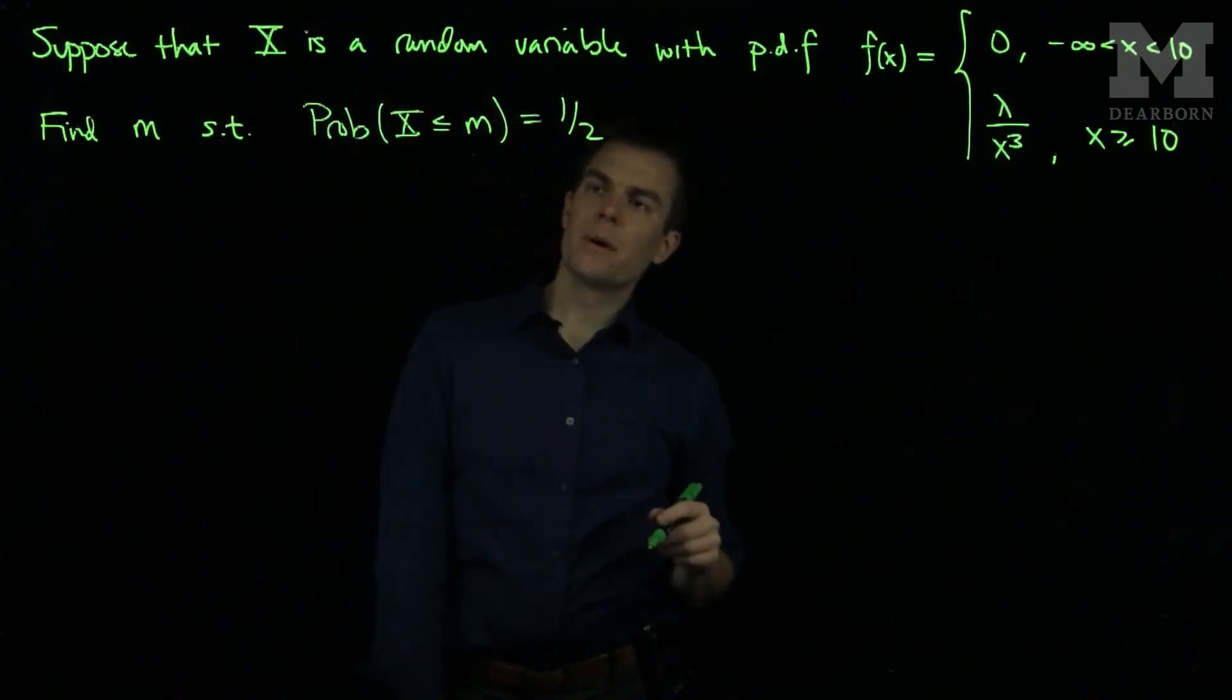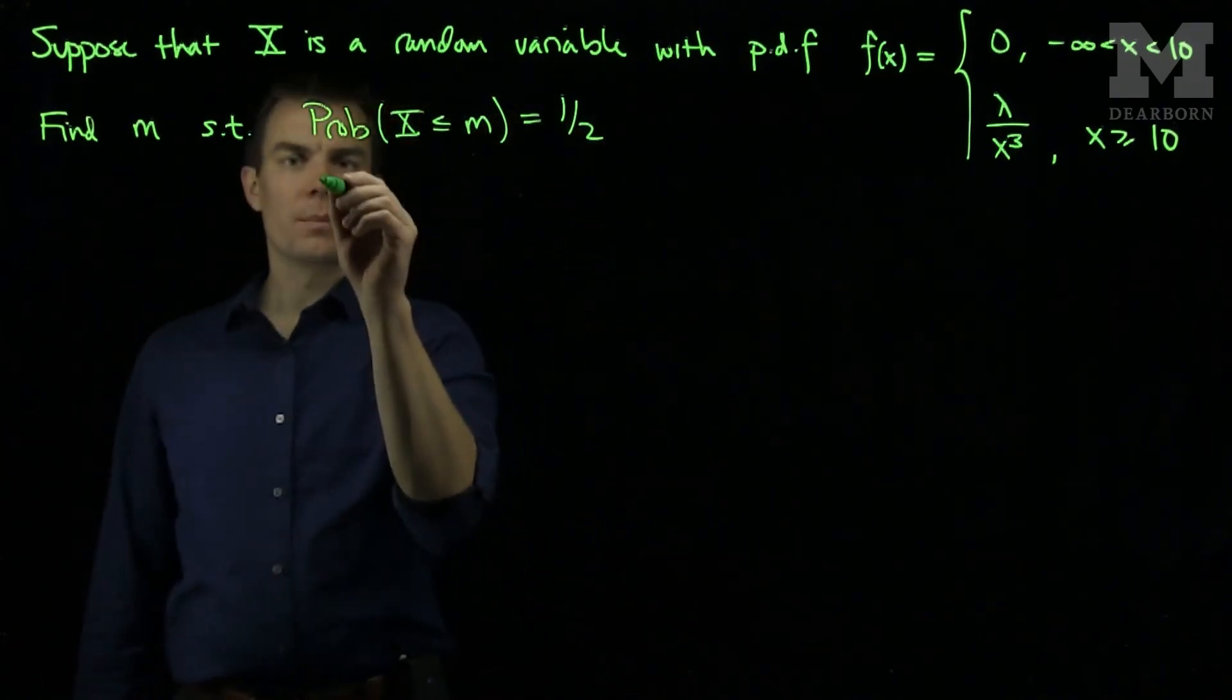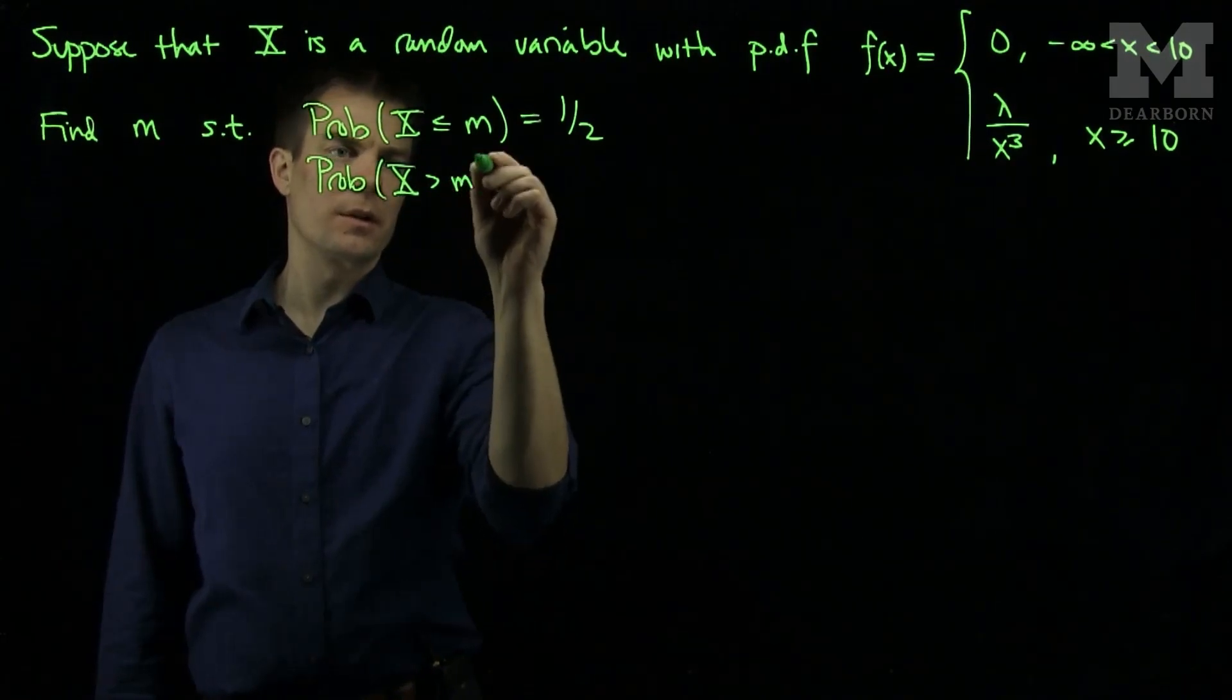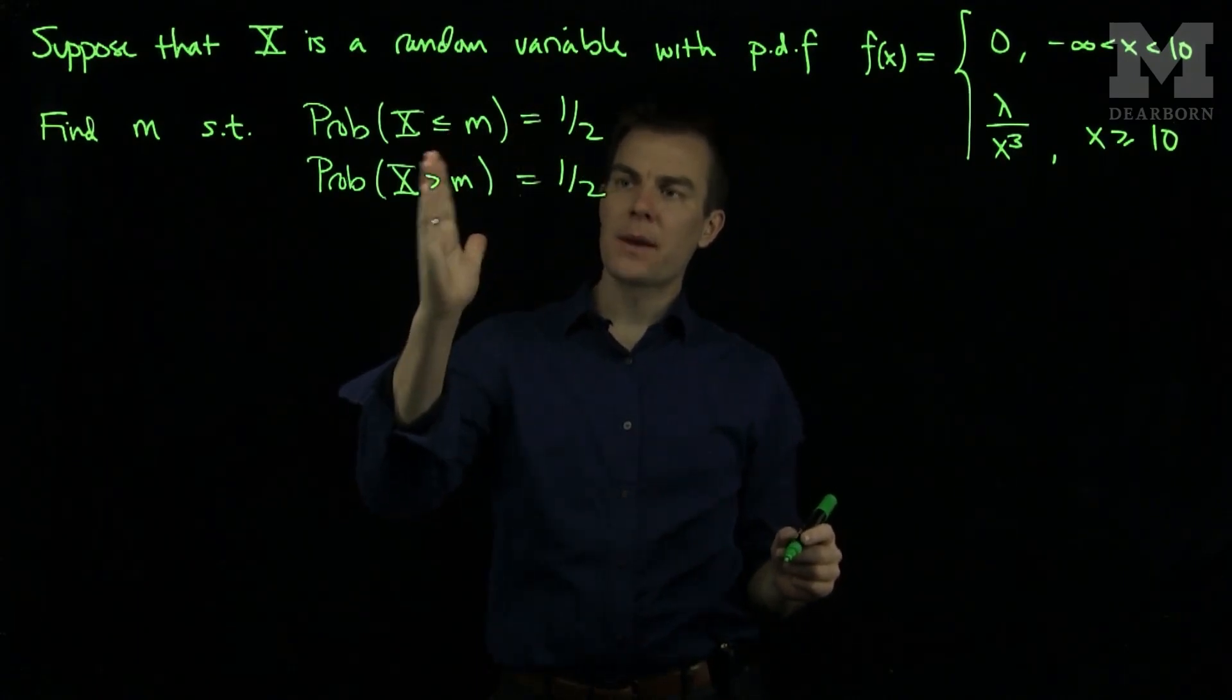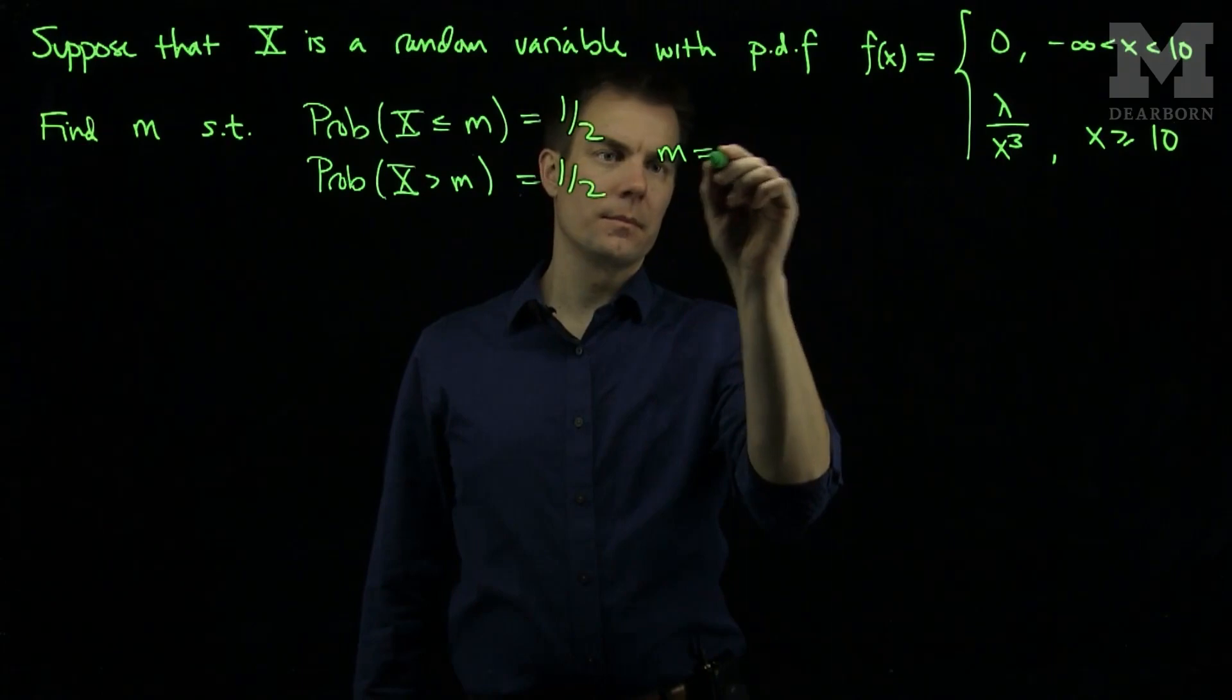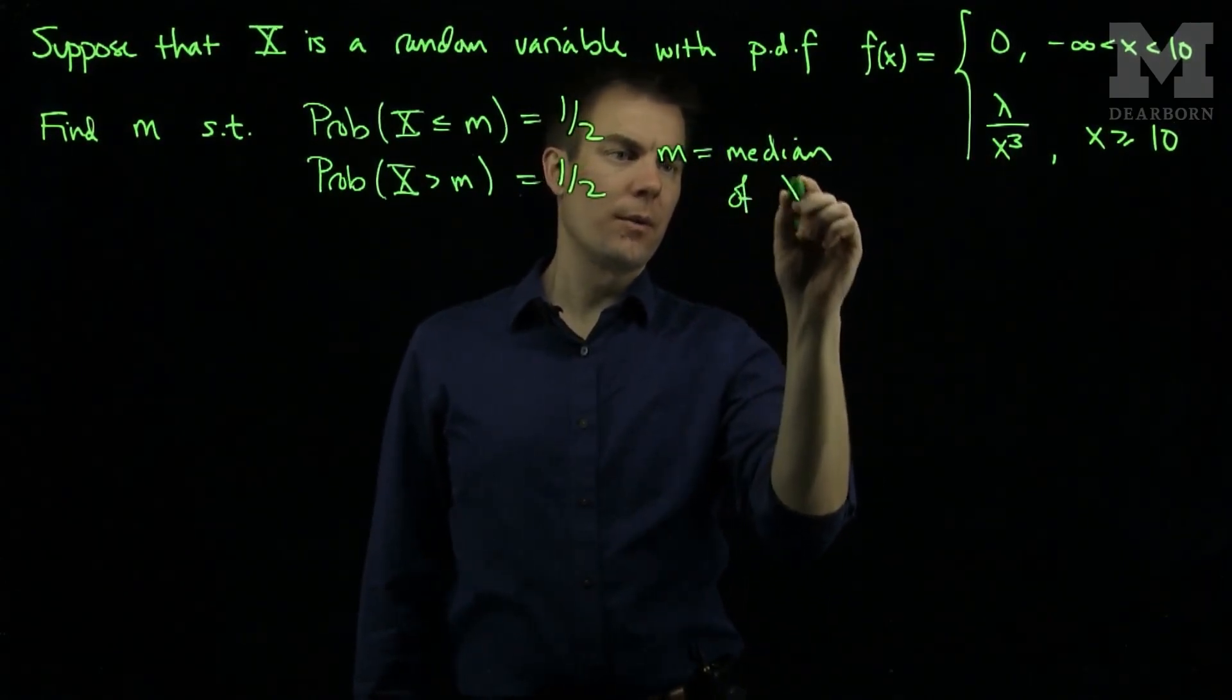We can note that the probability that x is less than or equal to m is a half. This automatically implies that the probability that x is strictly bigger than m is also equal to 1 half. So half the time x is less than m and half the time x is greater than m. This m is called the median value of the random variable x.